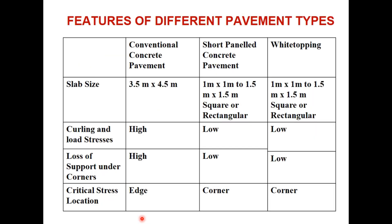There are three types of concrete overlays: conventional, short paneled, and white topping. Conventional and short paneled are also used as normal rigid pavements, and when used as an overlay on a bituminous surface, they become white topping. Conventional concrete pavement has a slab size of 3.5 to 4.5 meter, whereas short paneled and white topping use 1 meter by 1 meter or 1.5 meter by 1.5 meter. Curling and load stresses are high in conventional pavement due to larger, thicker slabs, and low in short paneled and white topping.